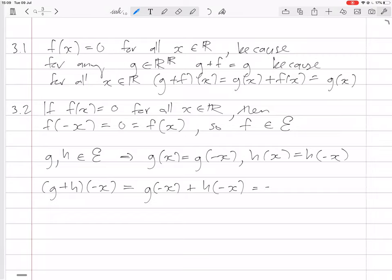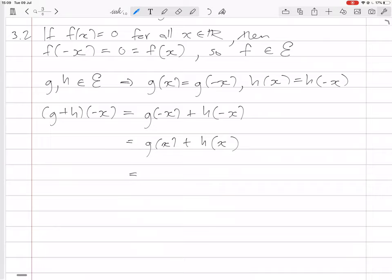But g of minus x is g of x. For the next slide. And h of minus x is just h of x. So that's g plus h of x. And so that all proves that g plus h is even. So this thing is closed under addition.